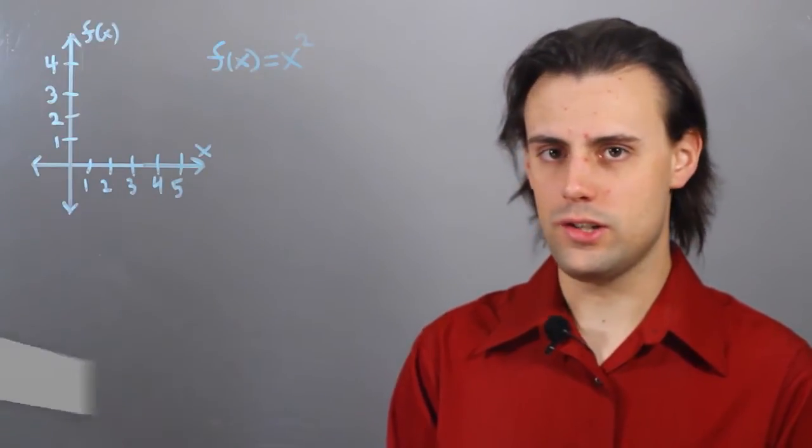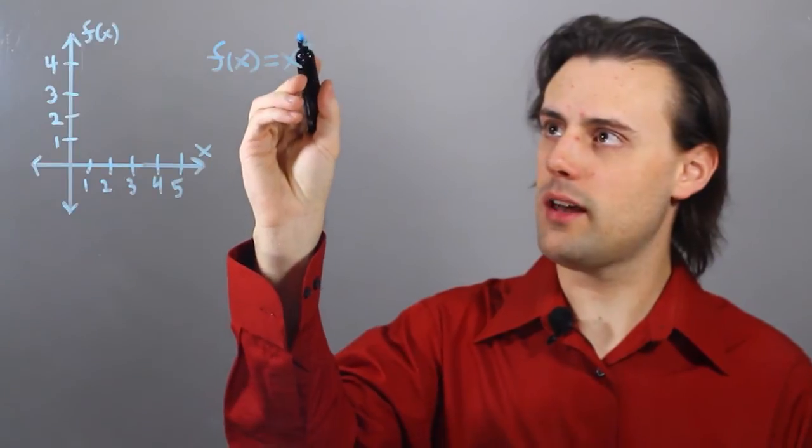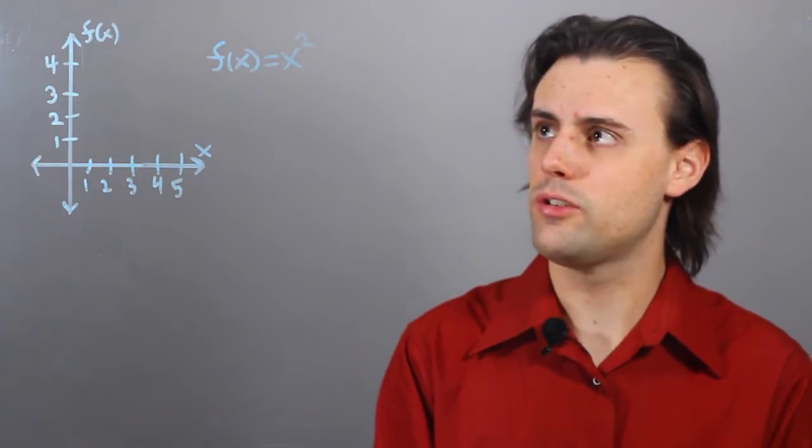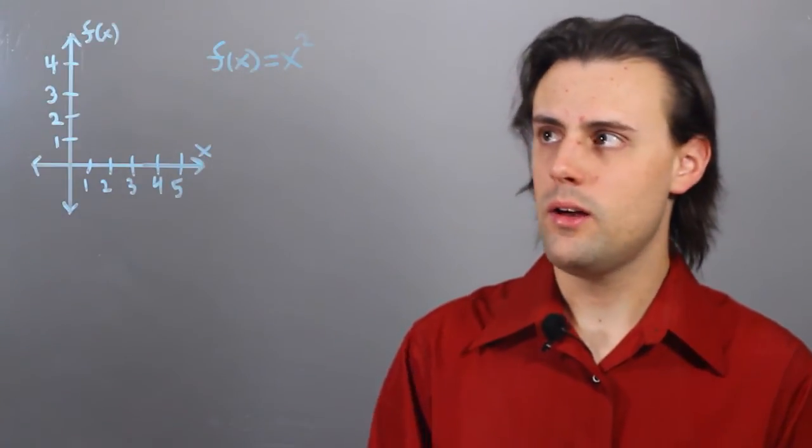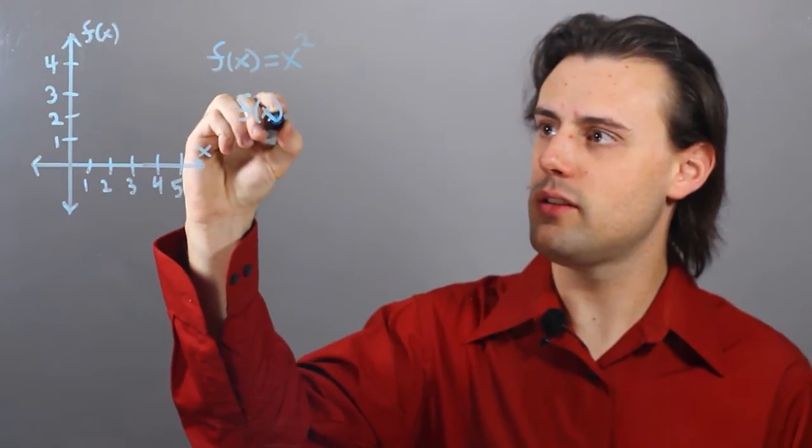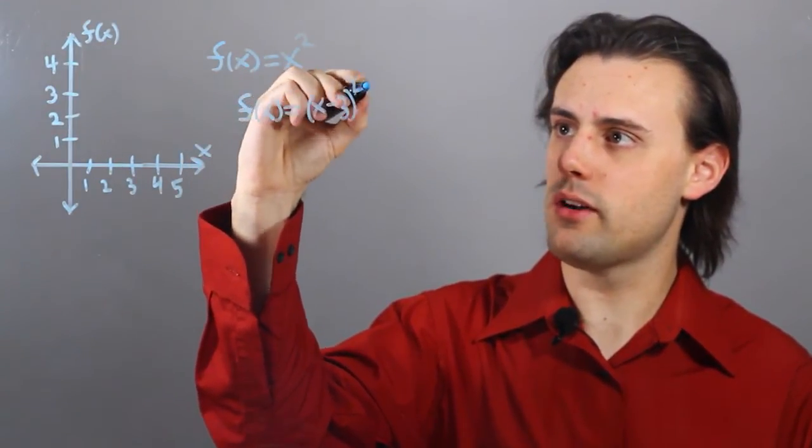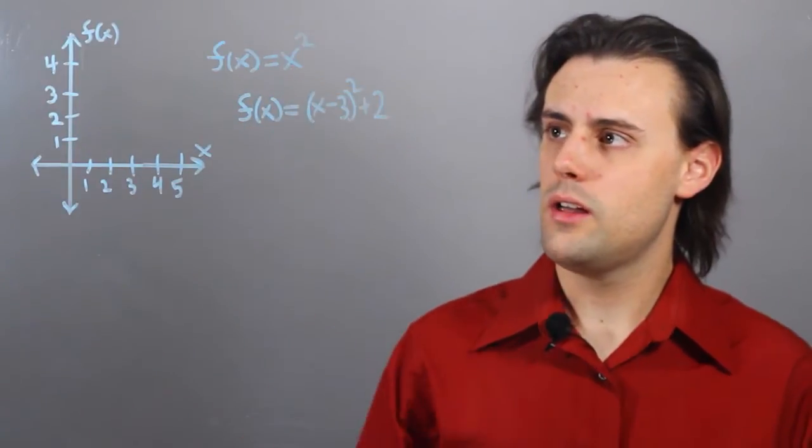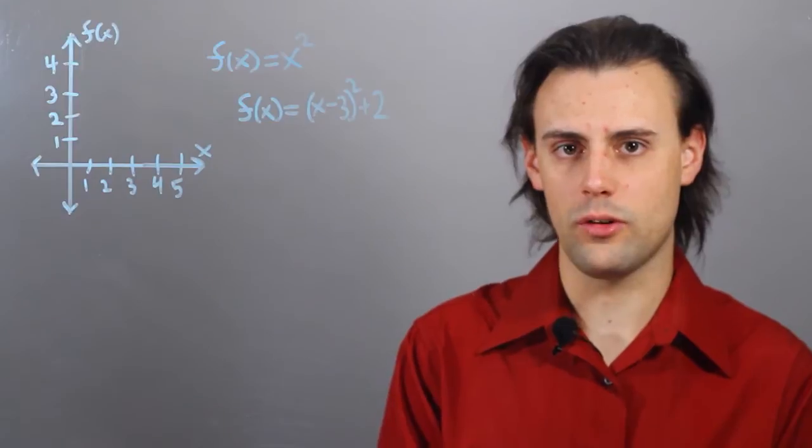A quadratic function is one in which the term involving x has the highest power 2 in it, and you can have multiple terms in your function. But if we consider a function such as f of x is equal to x minus 3 squared plus 2, then we can identify the different components of the quadratic function when graphing it.